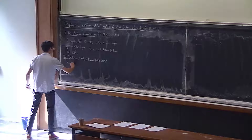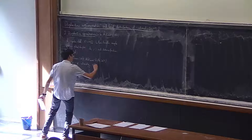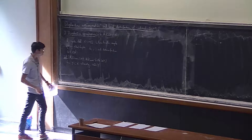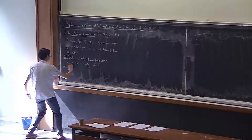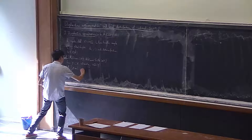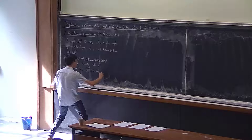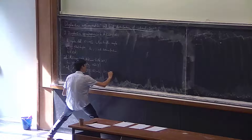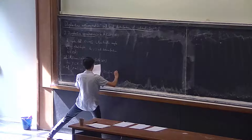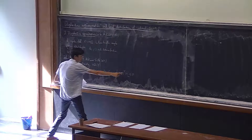For Y a subvariety, we define the approximation constant, which I will denote by α_Q(Y), to be the infimum of the set of positive numbers γ such that there exists a constant and a sequence in Y of rational points in Y over Q, different from the point Q, such that these points approximate Q with the product of the distance and their height to some power bounded by C.